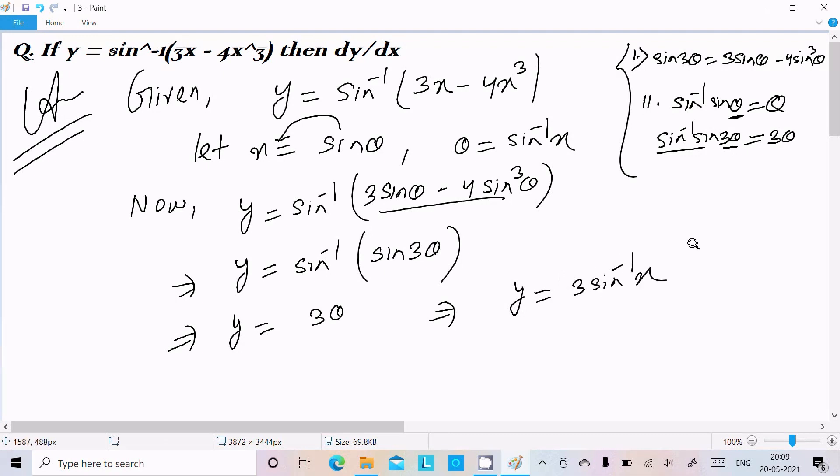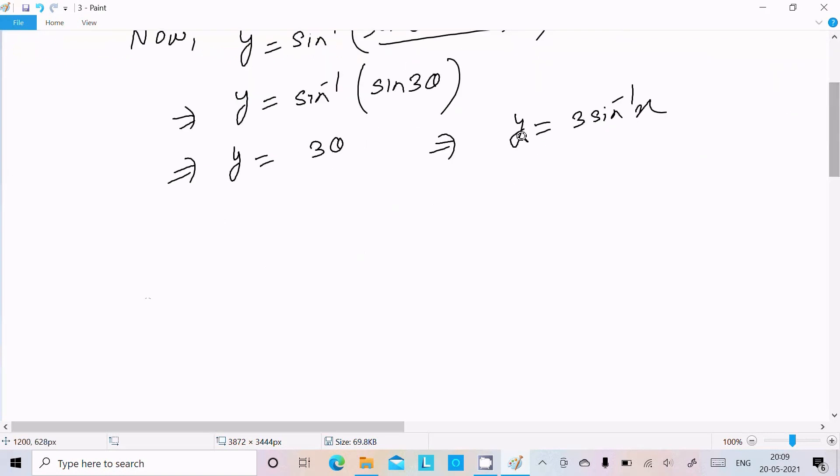Now let's do the differentiation. If I differentiate dy/dx, the constant part we write first, then d(sin⁻¹x)/dx. Now dy/dx, the sin inverse x differentiation is 1 by root under 1 minus x squared.